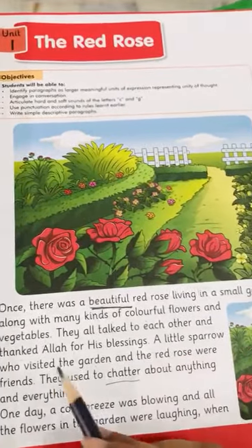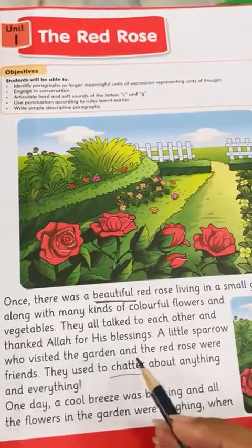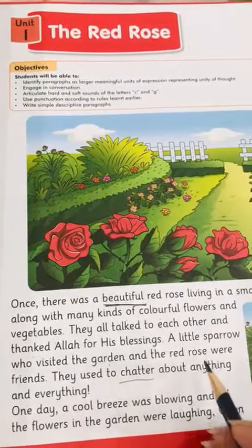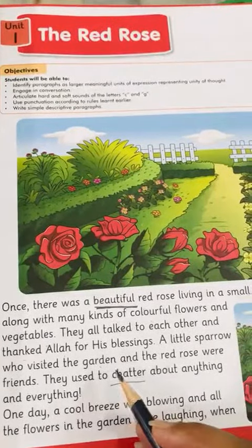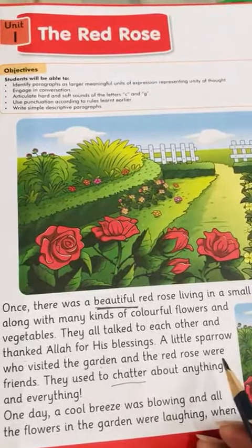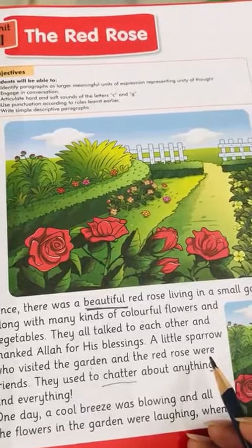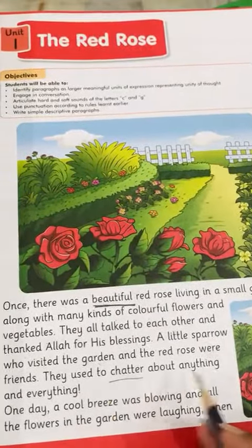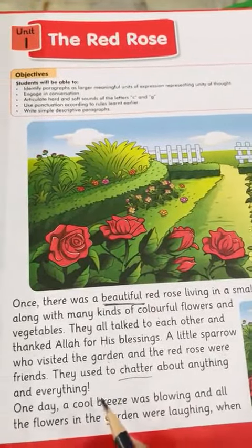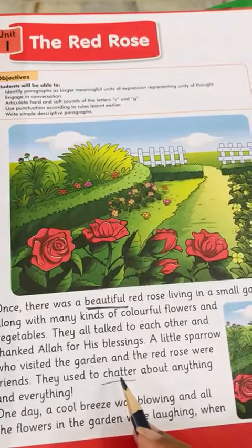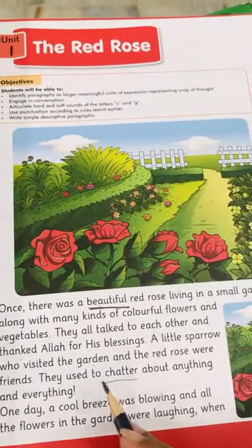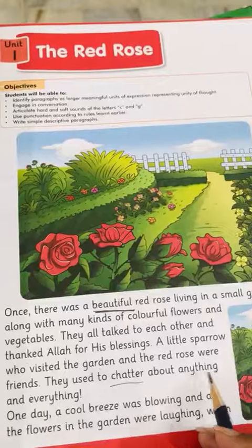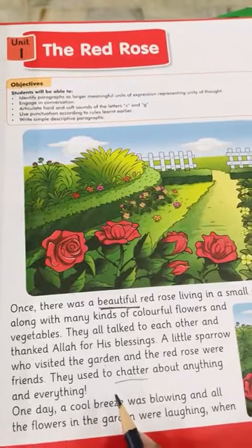A little sparrow who visited the garden and the red rose were friends. A little sparrow came to the garden and the red rose — they were friends together. They used to chatter about anything and everything. Chatter means talking; they talked about anything and everything.